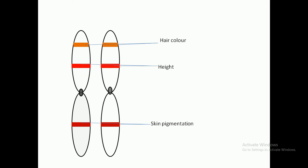Genes are the carriers of characters or traits, and the specific location where a gene is present on a chromosome is known as its gene location or locus. For example, there is a specific location for hair color, another for height, and another for skin pigmentation on the chromosome.